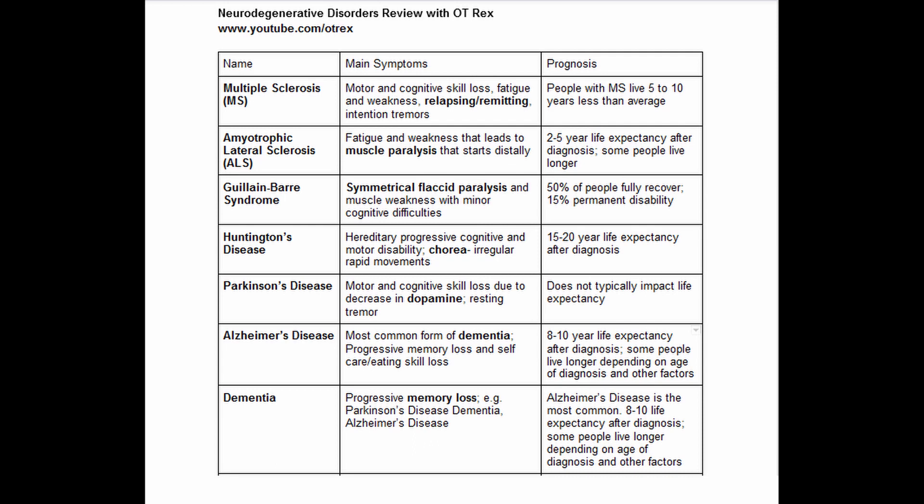Dementia is progressive memory loss, and it's a broader term for other conditions that cause memory loss — for example, Alzheimer's, as well as Parkinson's disease dementia, which is a specific type of Parkinson's disease. The prognosis is pretty similar to Alzheimer's, since that's the most common type of dementia, but it will depend on the person's circumstances.